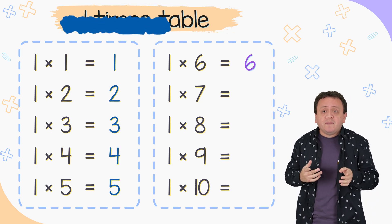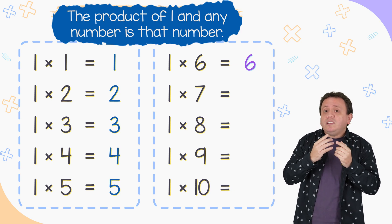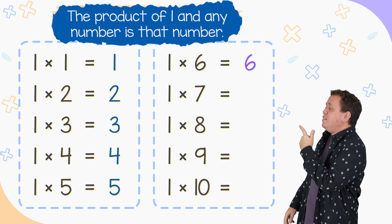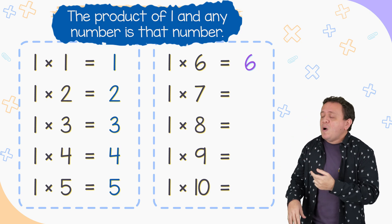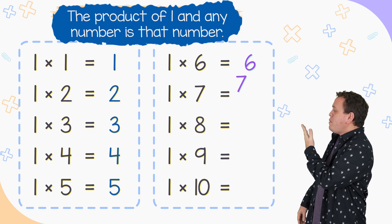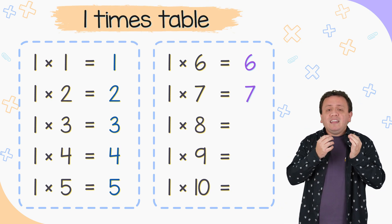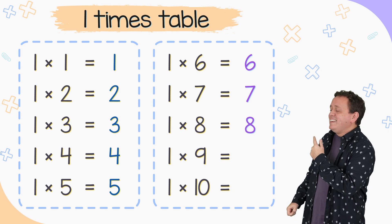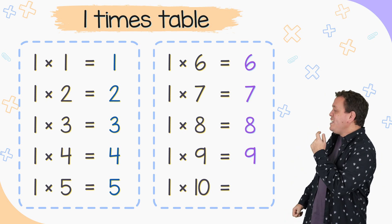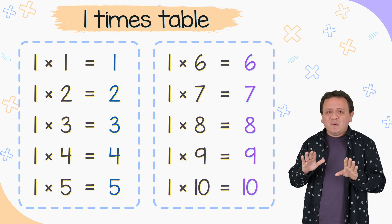Well, we have to remember a property. The product of 1 and any number is that number. Once again, the product of 1 and any number is that number. For example, 1 times 7 equals 7. We just need to write that 7 again. That's it. 1 times 8 equals 8. 1 times 9 equals 9. And 1 times 10 equals 10. We are done with this table.